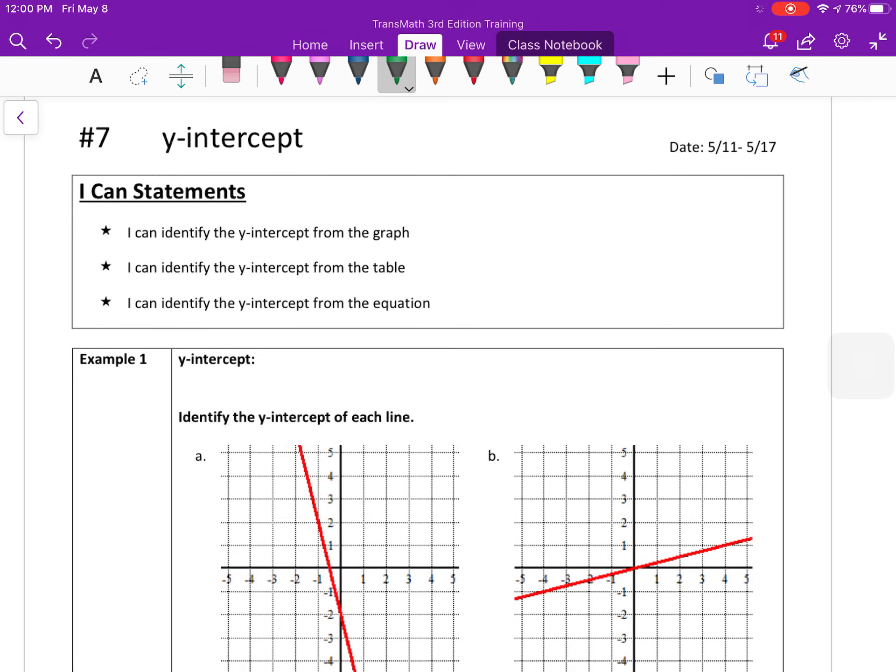So first, the y-intercept is the point where the line intersects the x and y-axis or the y-axis. So I'll write that down for you. The y-axis is the point where the line intersects the y-axis.